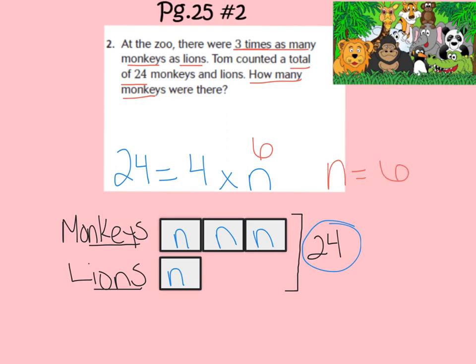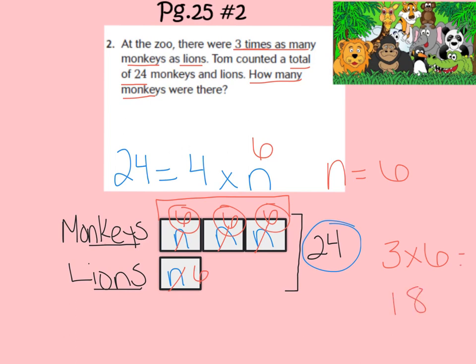Now that we know N equals 6, we can replace all of our Ns in our boxes with the number 6. Now that our model is completely filled out, we can answer our question. How many monkeys were there? We know that there are 6 lions. Looking at the monkeys section, I have 6 three times. So 3 times 6 equals 18. There are 18 monkeys. That is our final answer.